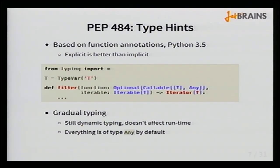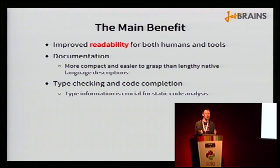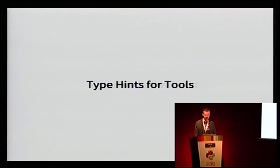One thing to remember from Guido's talk: Python will always be a dynamic language and type hints are completely optional. From my perspective, the main benefit of type annotations is readability — for both humans and tools. Readability for humans means better documentation. Readability for tools means the possibility of creating type checkers, linters, and code completion tools, for which type information is crucial.